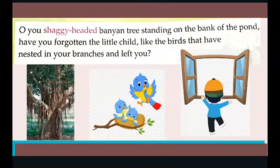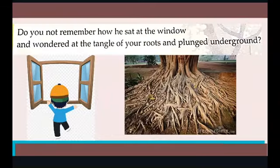Now let us see who the little child is. Do you not remember how we sat at the window and wondered at the tangle of your roots that plunged downward underground? So now the speaker is asking the banyan tree whether he has forgotten the little child who sat at the window and wondered at the tangle of the roots. All of you must have seen the roots of the banyan tree. Here is an image showing how they are all messed up, tangled up, knotted, and how they plunge underground deep into the soil. The child is looking from the window and is amazed, wondering at the roots that are tangled and how they go deep underground.